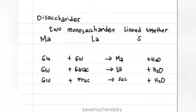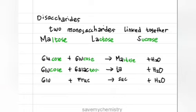A disaccharide is composed of two monosaccharides linked together: maltose, lactose, and sucrose. Glucose plus glucose linked together become maltose. Glucose and galactose linked together become lactose. And glucose and fructose linked together become sucrose.